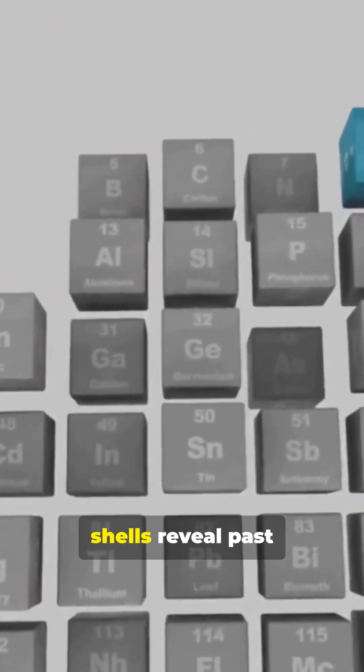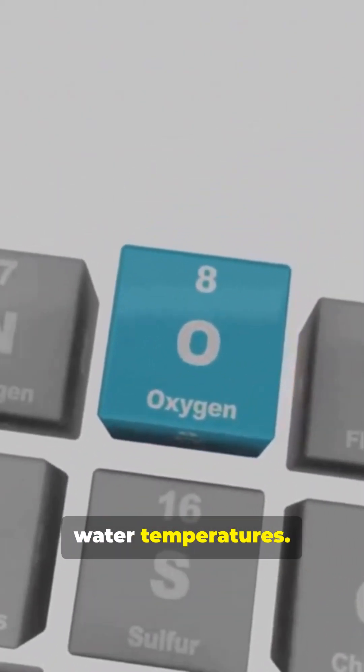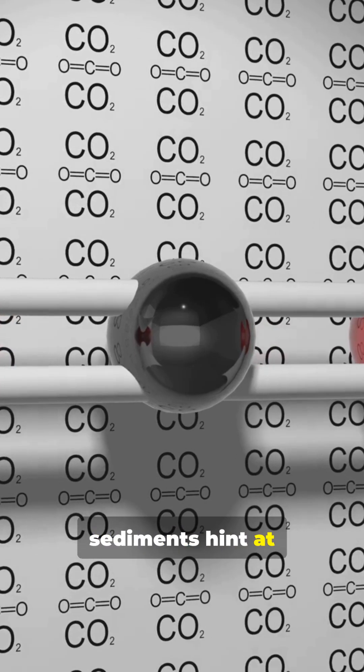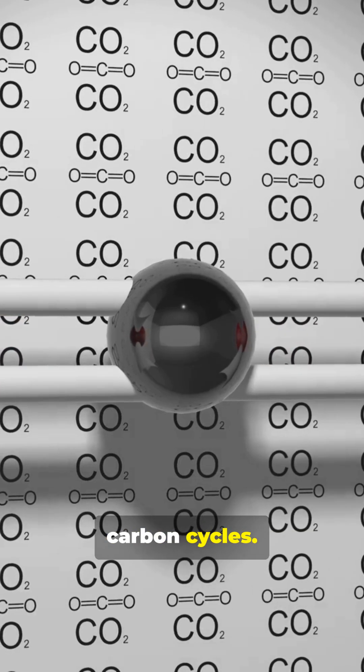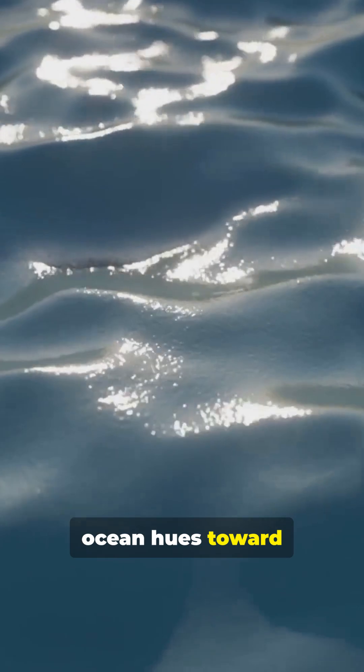Oxygen isotopes in shells reveal past water temperatures. Carbon isotopes in sediments hint at global ice and carbon cycles. Warmer seas shift ocean hues toward different blues.